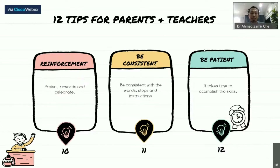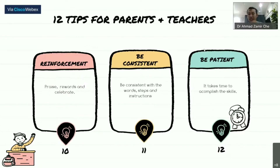Tip number ten is reinforcement. Reinforcement is very important and is normally used in combination with other techniques such as prompting, fading, and graduated guidance. Even if you don't have much, something as simple as praise or a reward works well — just put a sticker on the child's hand or in their book so they can collect stickers.